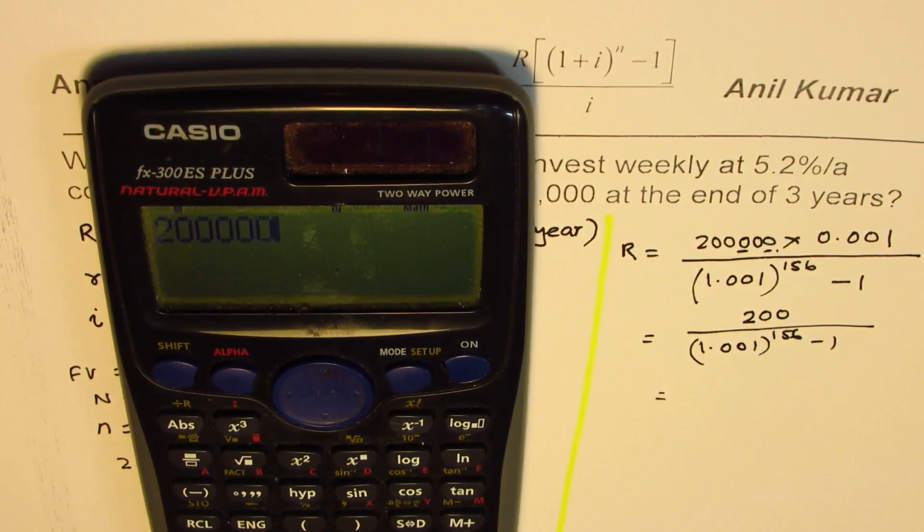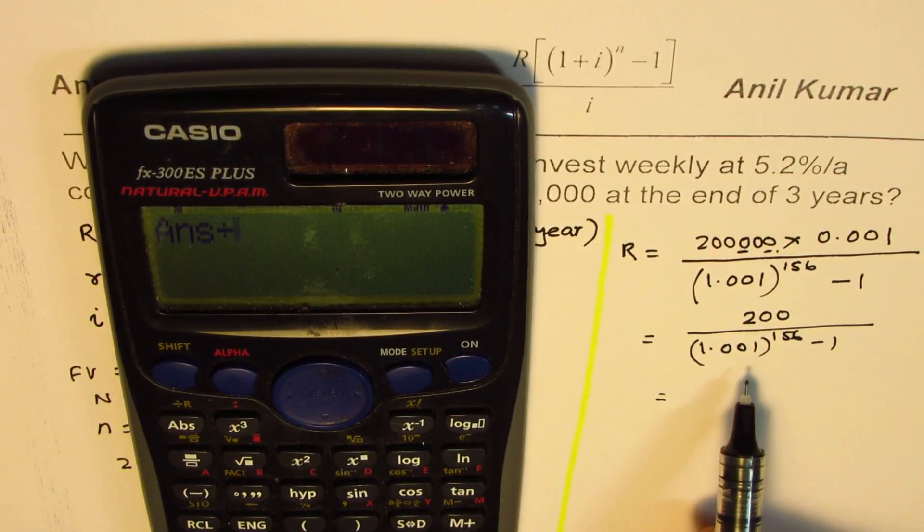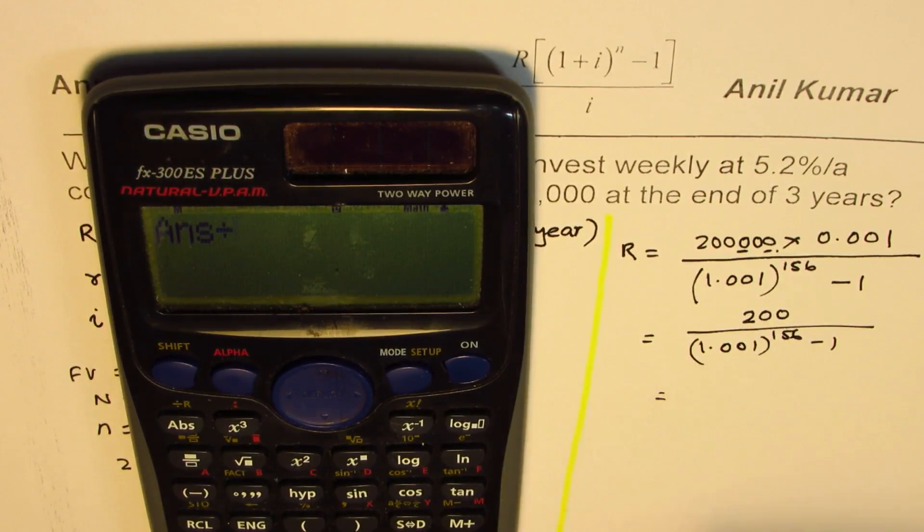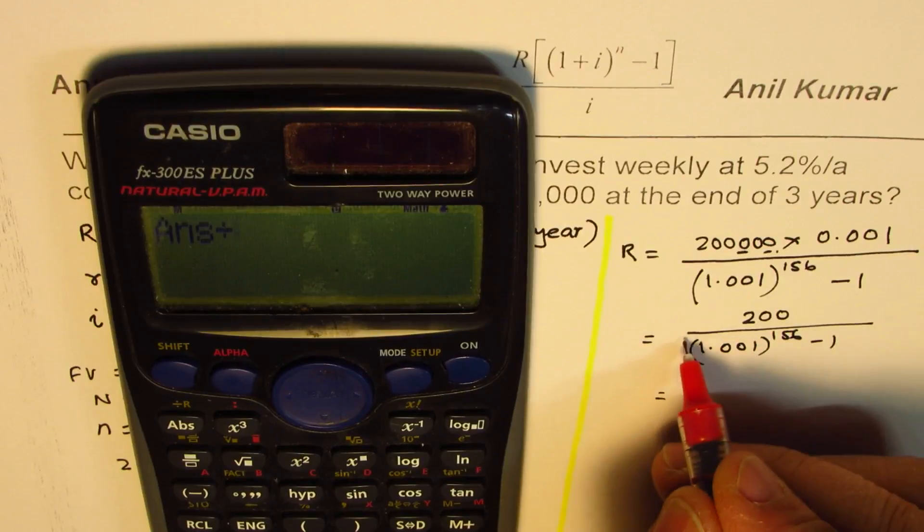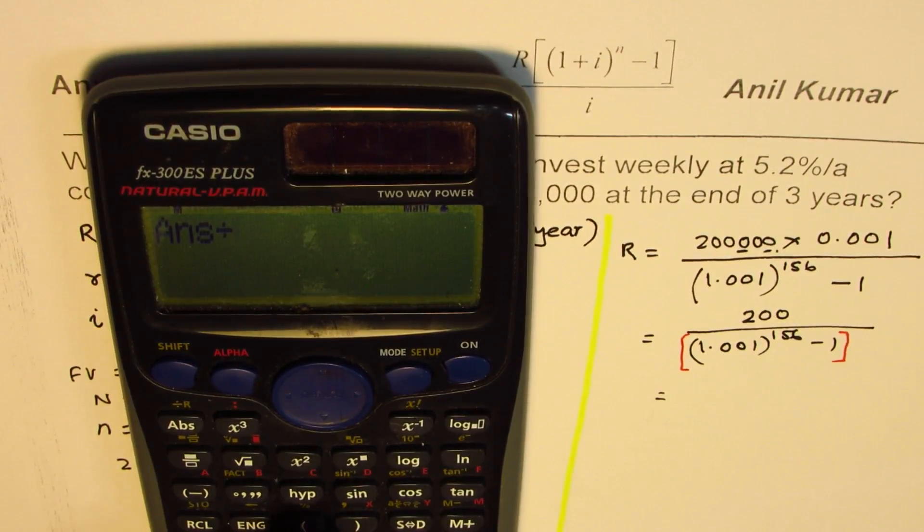So use the calculator. Say 200 times 0.001 equals 2. And then you say divide by. But now the important thing is put brackets. So if you miss brackets, you're going to get wrong results. That is why I was trying to do it separately. So how many brackets? Two brackets. Why two? Understand that part. Do you understand?